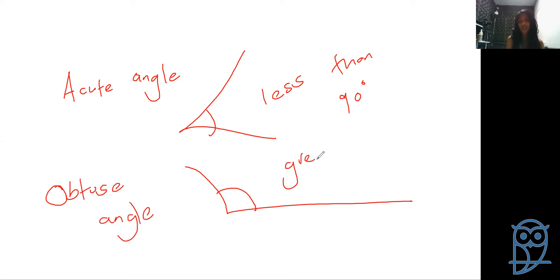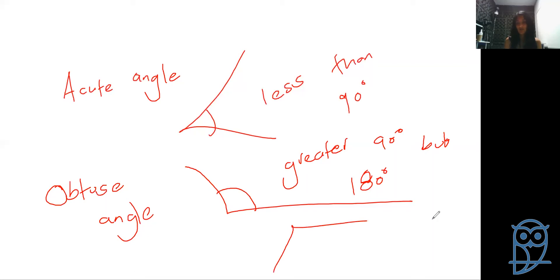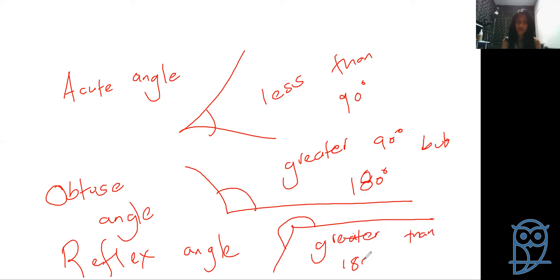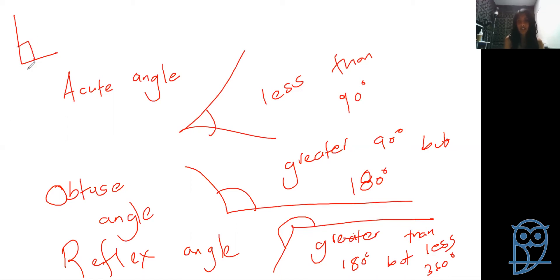An obtuse angle is an angle greater than 90 degrees but less than 180 degrees. A reflex angle is greater than 180 degrees but less than 360 degrees. And of course, a right angle is exactly 90 degrees.